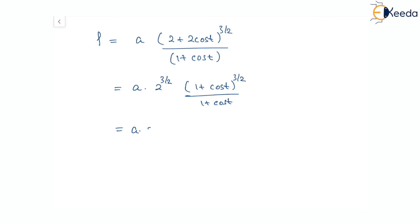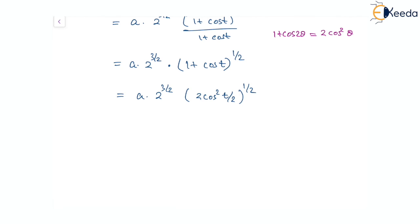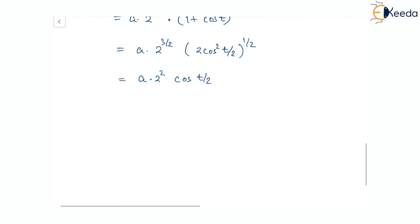So rho equals a times of 2 to the power 3 by 2. The 1 plus cos t to the power 3 by 2 in the numerator and 1 plus cos t in the denominator cancel, leaving 1 plus cos t to the power of 1 by 2. Using the identity 1 plus cos t equals 2 cos squared t by 2, we get a times 2 to the power 3 by 2 times 2 cos squared t by 2 to the power 1 by 2. Simplifying, the radius of curvature rho equals 4a cos t by 2.